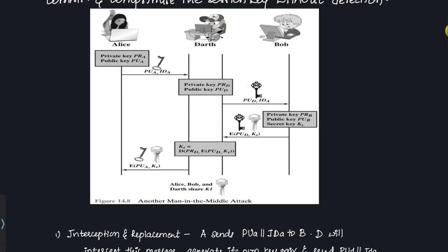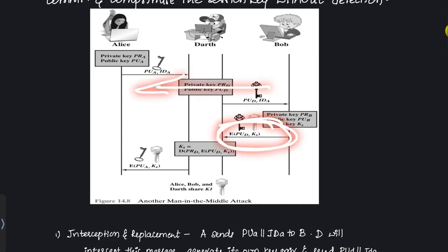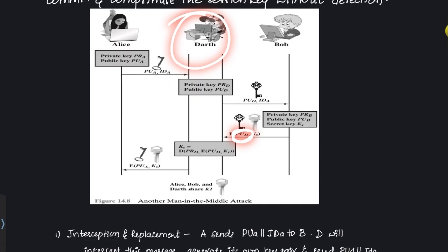Next, B responds back, thinking he is sending a message to Alice. B generates a session key KS and sends it encrypted with what he believes is A's public key — but which is actually PU_D. Bob thinks only Alice will be able to decrypt this, but in reality Dart holds the corresponding private key PR_D. So Dart is able to decrypt the message and obtain the session key KS.